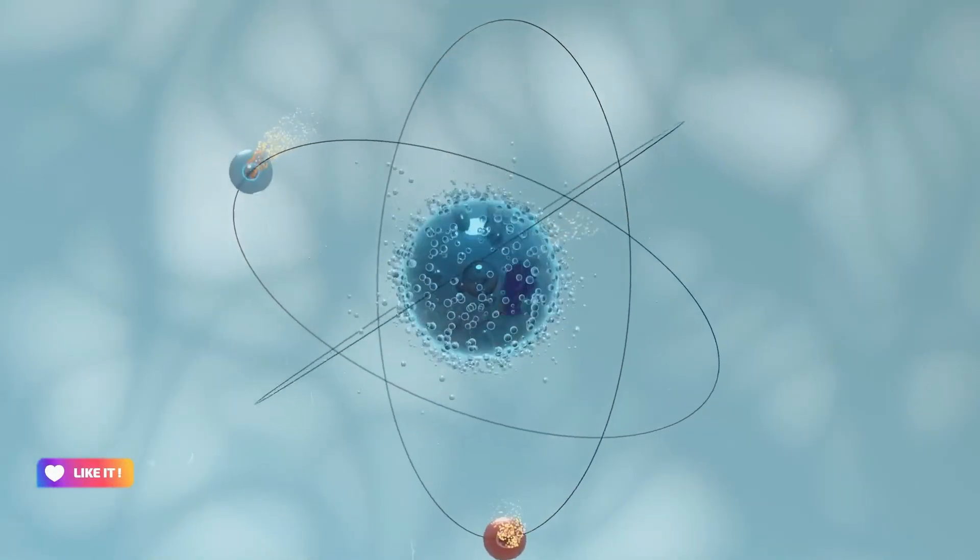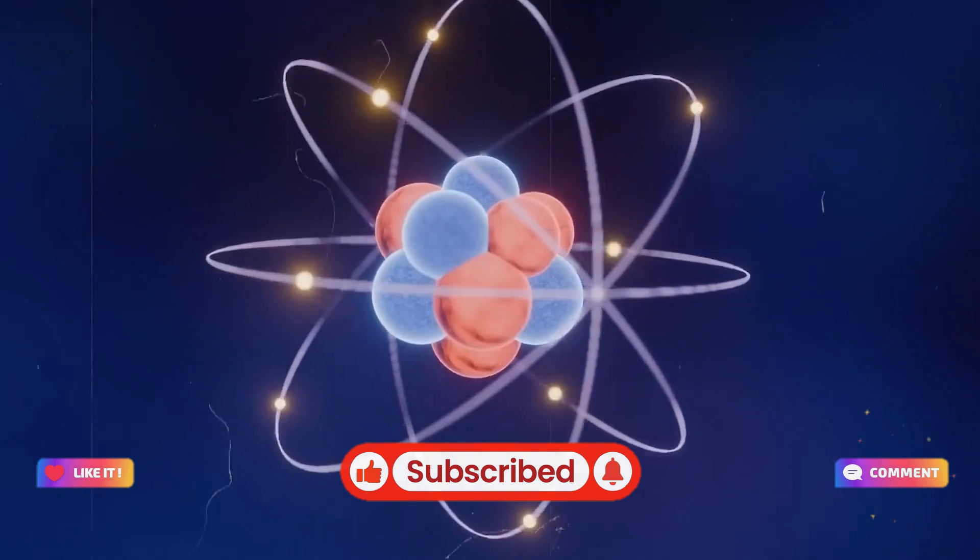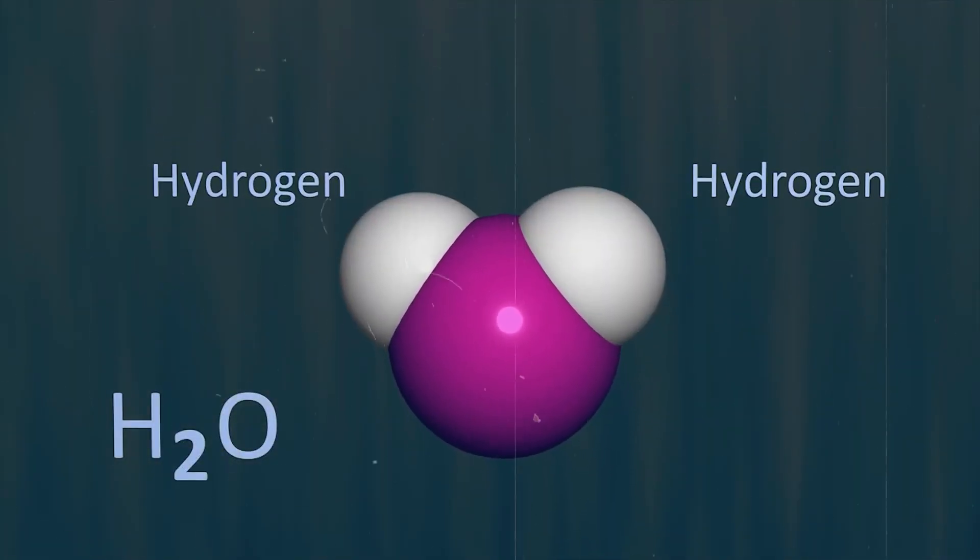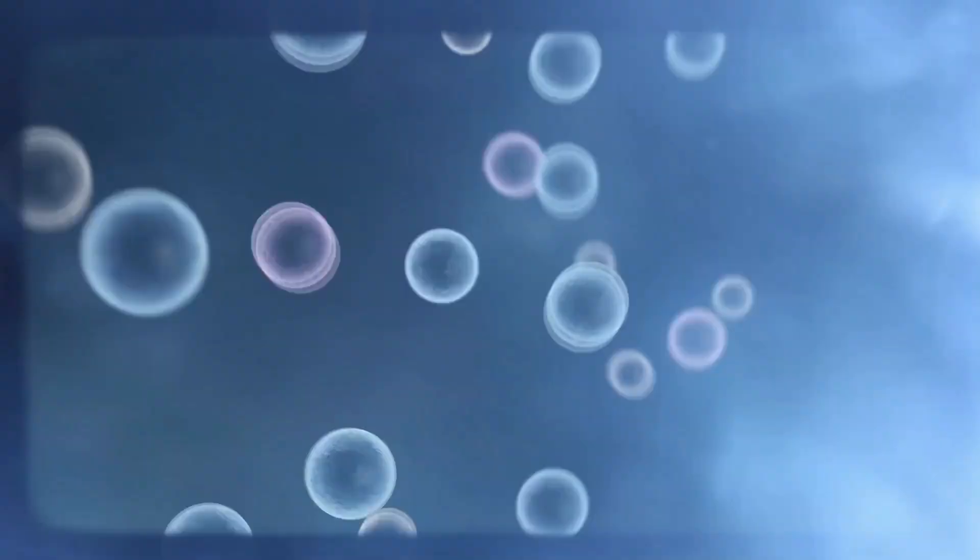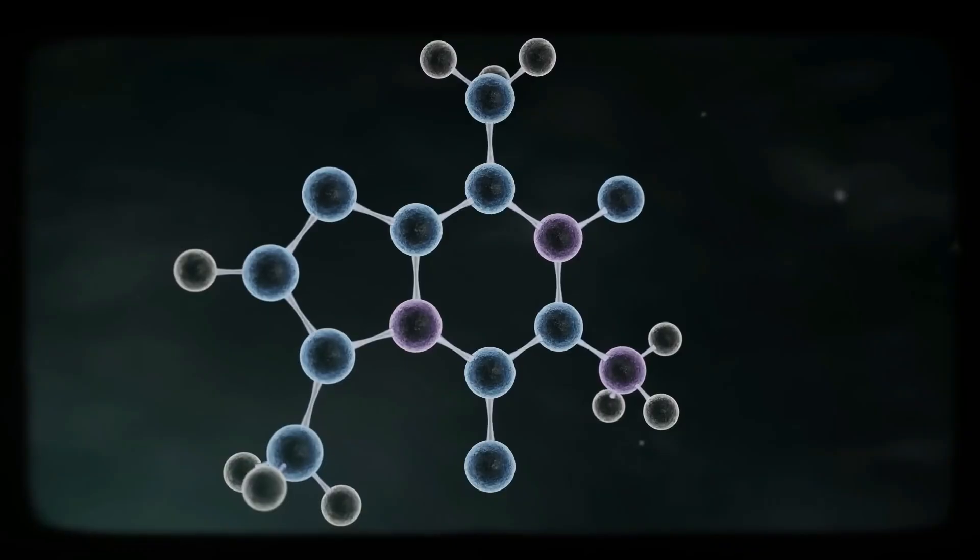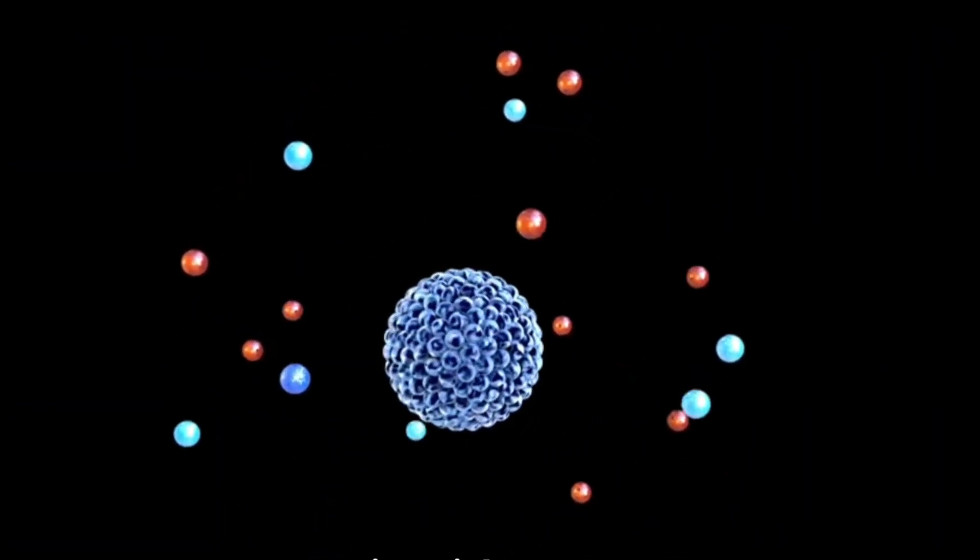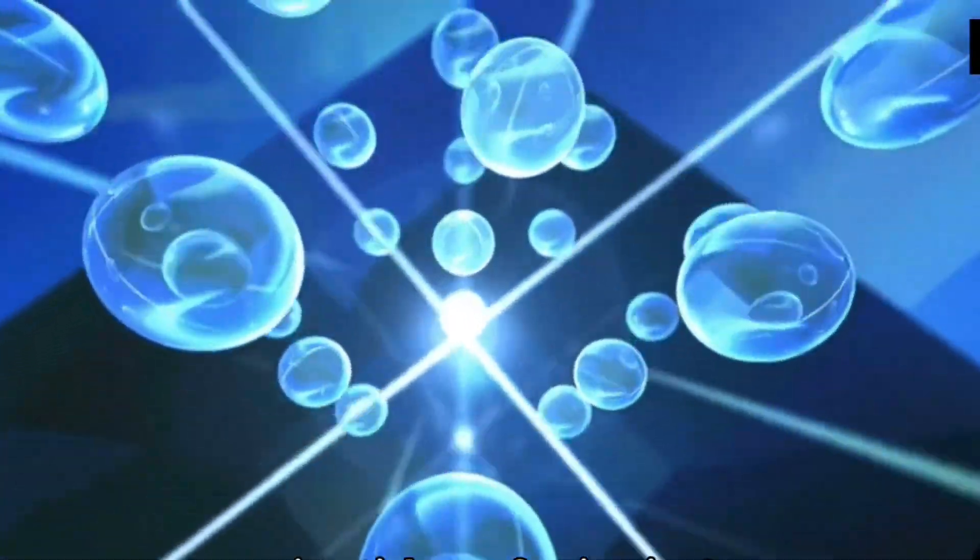When ultraviolet light hits titanium dioxide, it excites the electrons in the atoms to a high-energy state. What happens next is strange. The electrons leave their original place, creating positively charged holes. These charge carriers, the excited electron and the hole, are separated by the light. And while only the electron is a real particle, the hole behaves like one too. It can move around like a positive particle. In physics, this is called a quasi-particle.